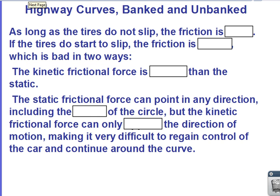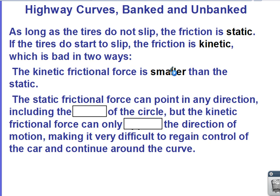As long as the tires do not slip, the friction would be static friction. If the tires do start to slip, that friction would be kinetic, and that's bad for two reasons. One, the kinetic frictional force is always smaller than the static frictional force. And the other reason, which may not be as obvious, but is actually the reason that I think is more dangerous: the static frictional force can point in any direction, including towards the center of the circle, but kinetic friction can only oppose the direction of motion, making it very difficult to regain control of the car and continue around the curve.